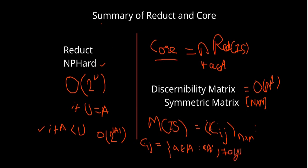If you look at the discernibility relation, the definition is similar but there is a difference in the attribute function value. In the indiscernibility relation, the attribute value of x equals the attribute value of y for all x and y belonging to U. Here in the discernibility matrix, we look at where they are not equal. So this is about the discernibility matrix — the problem with using the indiscernibility relation and why we are using the discernibility matrix instead.